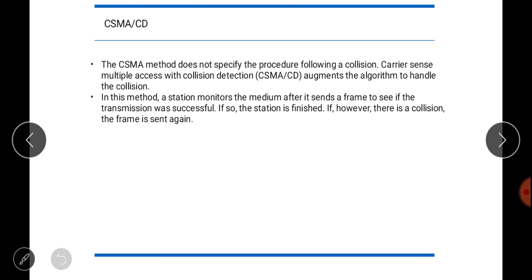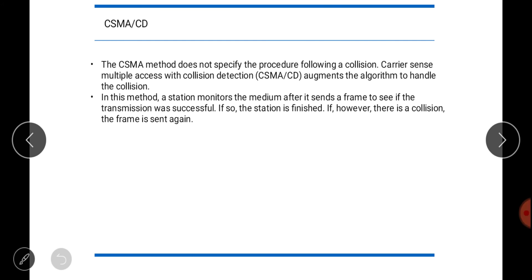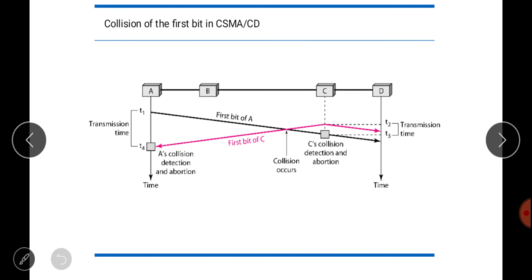CSMA does not specify the procedure following a collision. CSMA/CD — Carrier Sense Multiple Access with Collision Detection — augments the algorithm to handle collisions. In this method, a station monitors the medium after sending a frame to see if transmission was successful. If successful, it is finished. If there is a collision, the frame is retransmitted.